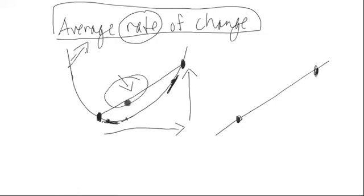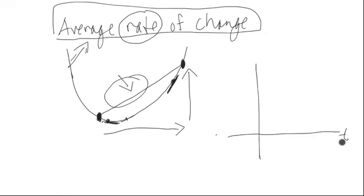There's lots of different applications of this basic idea. But if you think about, here's just a quick example. If we're thinking about position or how far we've traveled, and we're thinking about the x-axis as being time, and this is how far we've gone.